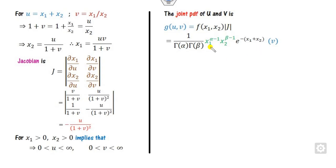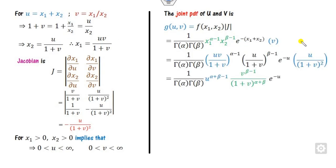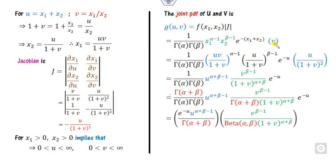Substituting all values — x1, x2, and the Jacobian — into the joint PDF, we get the combined expression. We can take the coefficient of u separately and the terms in v separately. Since gamma(α)·gamma(β) appears, we multiply and divide by gamma(α+β) to introduce the beta function.